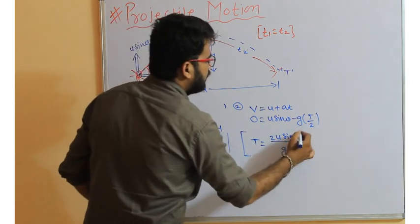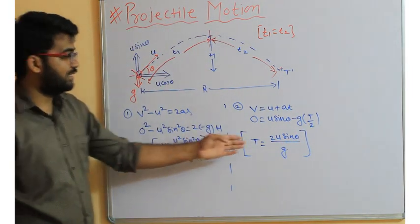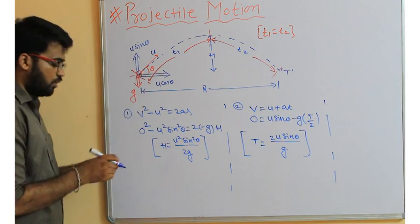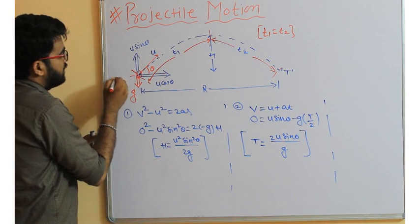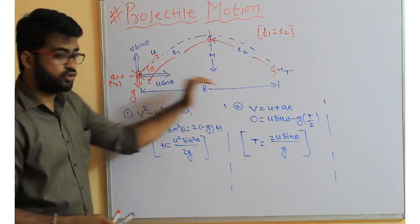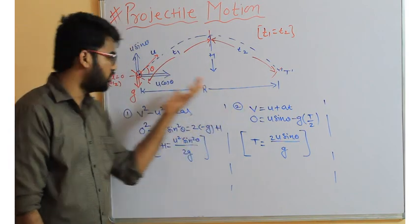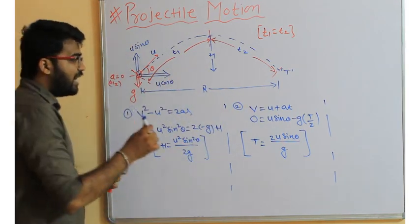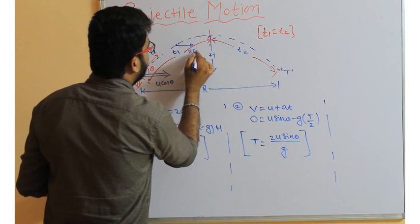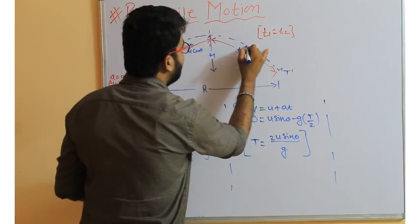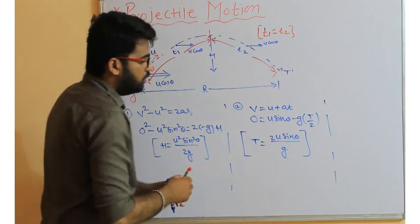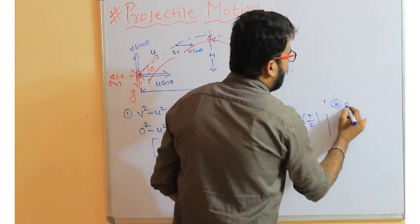So we have: maximum height = u² sin²θ / 2g, and time of flight = 2u sinθ / g. Now, for range — in the horizontal direction there is no acceleration, so acceleration equals zero. Because of this, the horizontal velocity u cosθ is uniform and never changes throughout the motion.